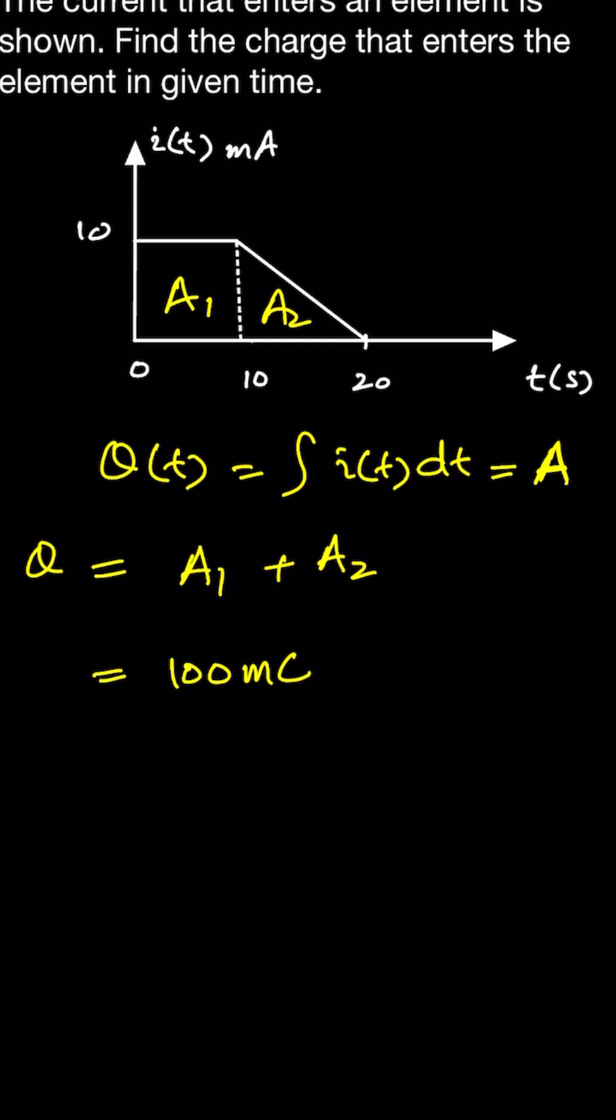Since the product of ampere and time is coulombs, and the unit of charge is coulombs, plus the second area - and the second area is a triangular area. So we will say 1 divided by 2.